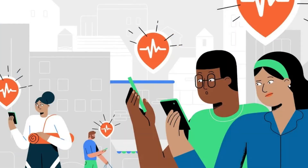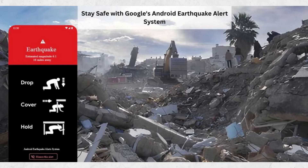Once confirmed, it sends alerts to Android users in the affected areas. Many Android users report that they receive the alerts 5 to 10 seconds before they feel any shaking. This alert system can be very useful for you if you live in an earthquake-prone area.